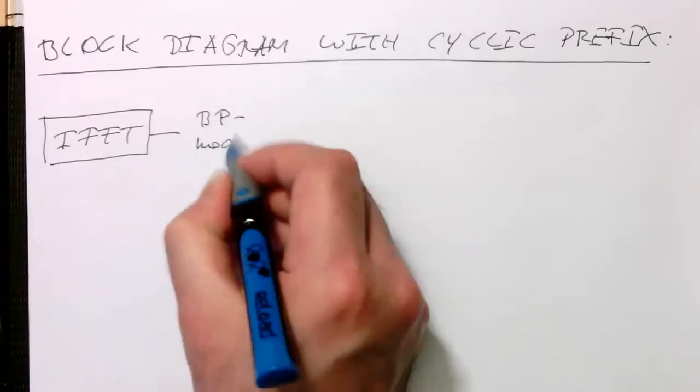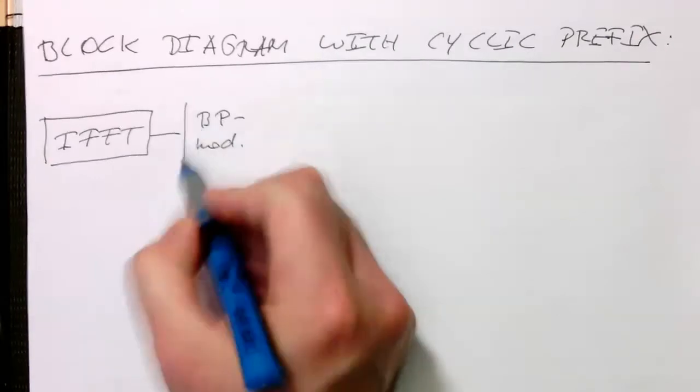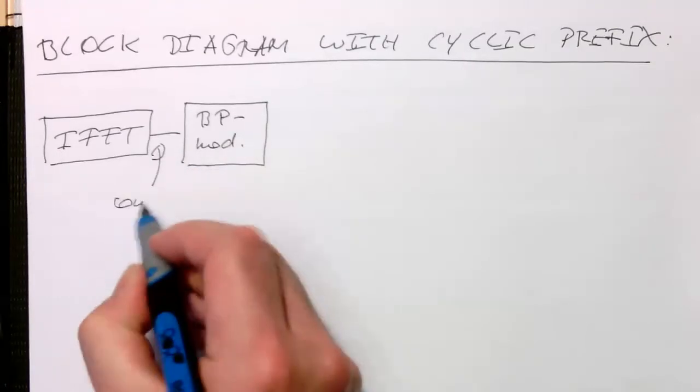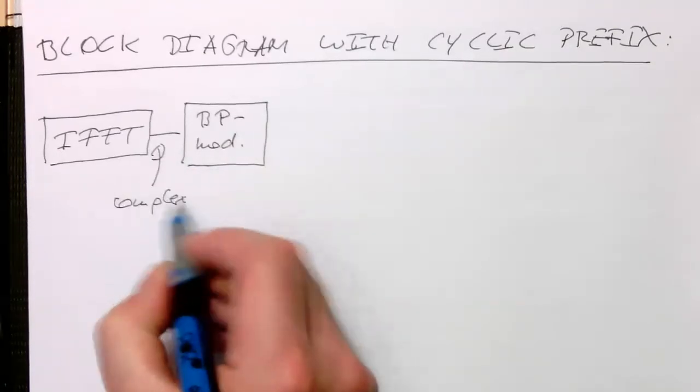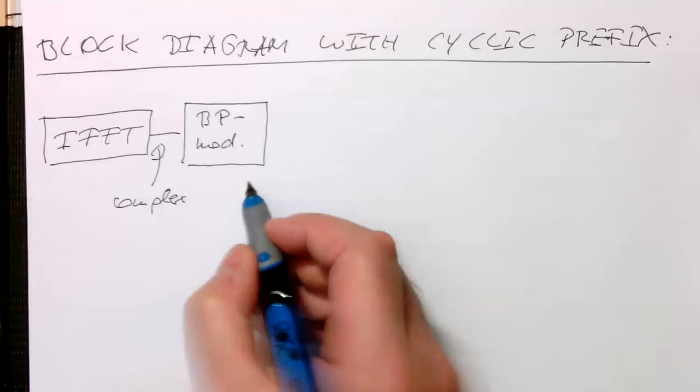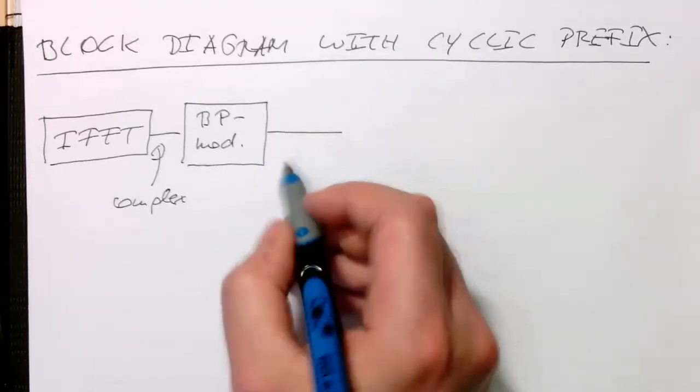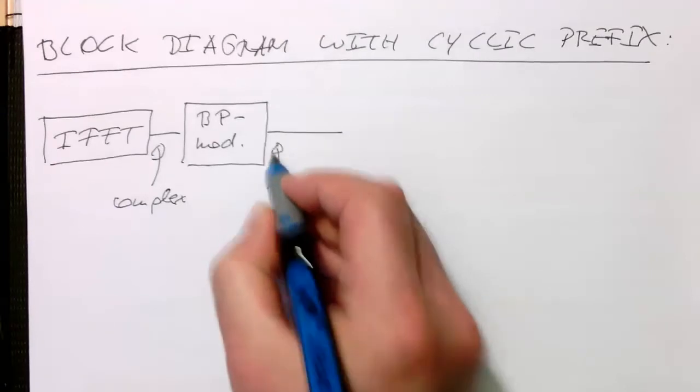And remember, so these symbols here, they were still complex. And here we're getting our real values, our real valued symbols out there.